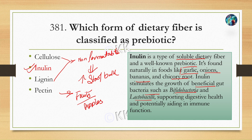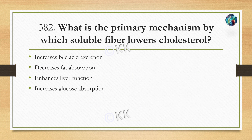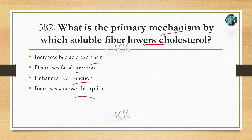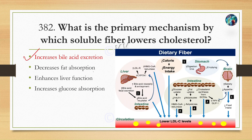Next question: What is the primary mechanism by which soluble fibers lower cholesterol? Option A: increase bile acid secretion. Option B: decreases fat absorption. Option C: enhances liver function. Option D: increases glucose absorption. The correct option is Option A, increase bile acid secretion. Soluble fiber increases bile acid secretion, and bile acid plays an important role in fat digestion.